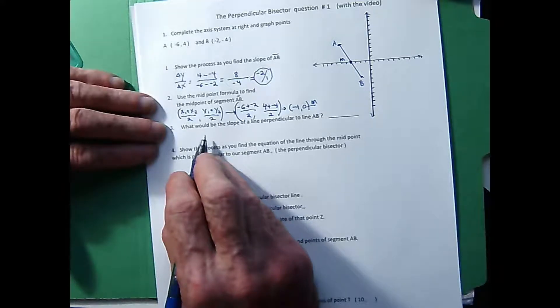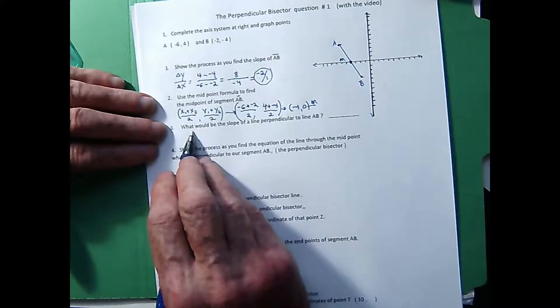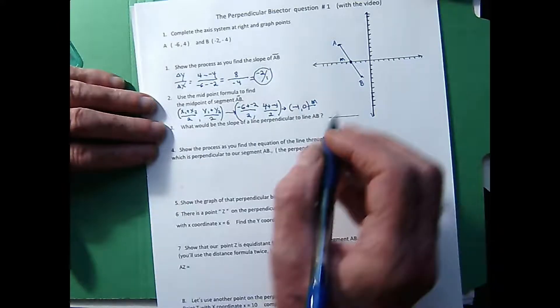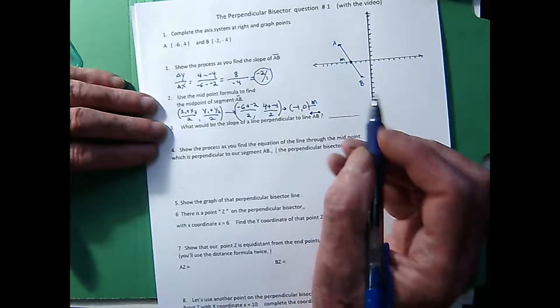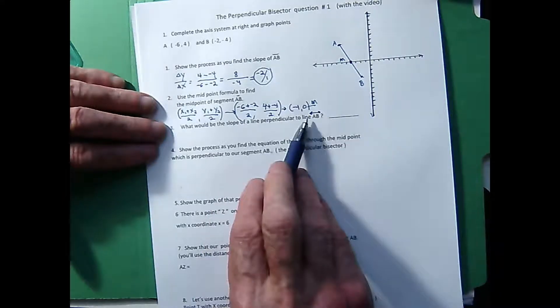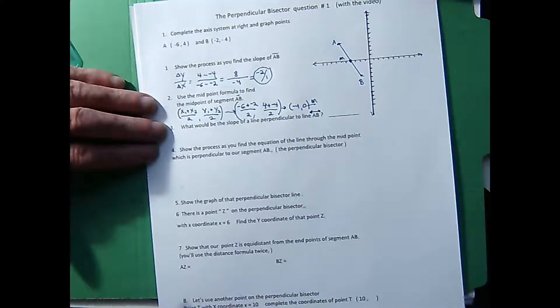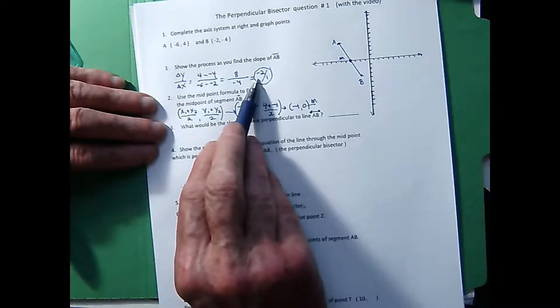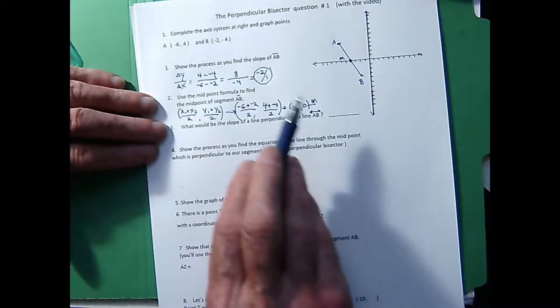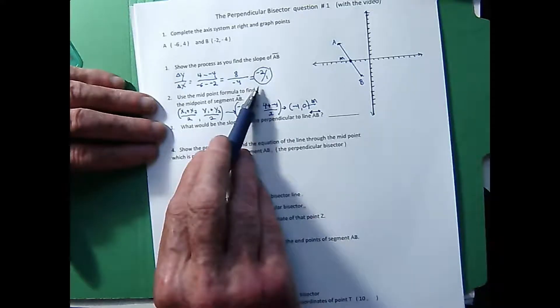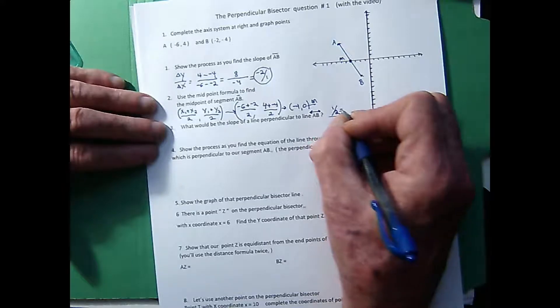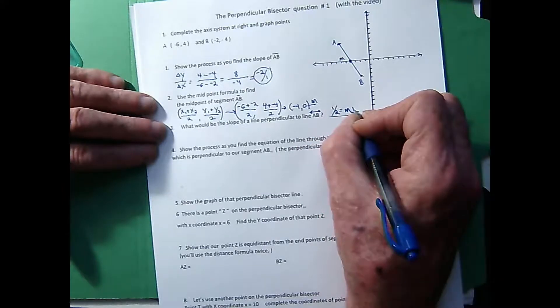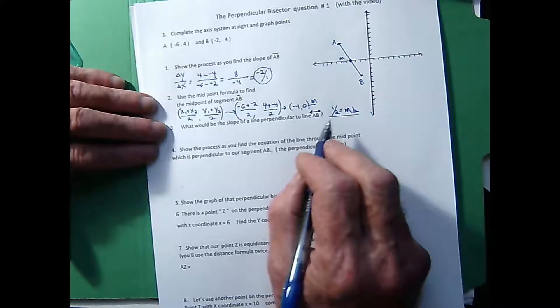As we go further to find the perpendicular bisector, it asks: what would be the slope of a line that's perpendicular to line AB? If lines are perpendicular, there are things we should know about their slopes. The slope of AB is negative 2 over 1, and we want the perpendicular slope — it has to be the negative reciprocal of this fraction. The negative reciprocal of negative 2 over 1 would be positive 1 over 2. The slope of the perpendicular is positive one-half.